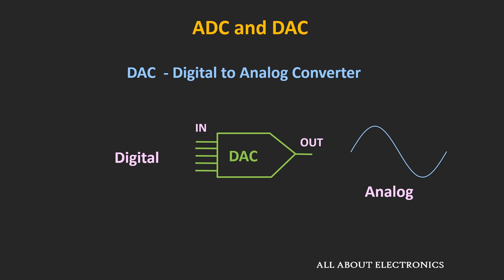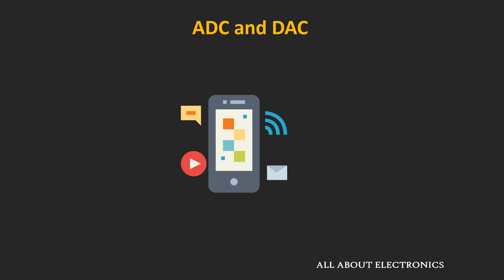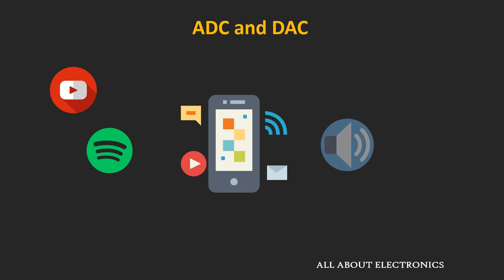Knowingly or unknowingly, we all are using ADC and DAC in our day-to-day life. For example, whenever we are streaming music on our smartphone, this digital bitstream is converted into an electrical signal, and through the smartphone speaker we are able to hear the music. Here, the DAC inside the smartphone converts the digital bitstream into the analog signal.